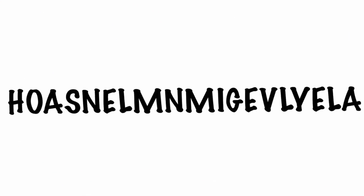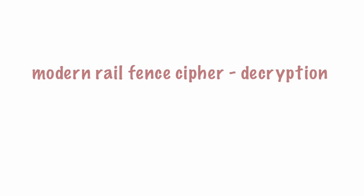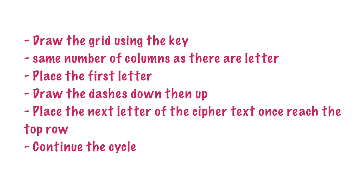Next, we will move on to decrypting the cipher. This requires us to reconstruct the grid which was used to encrypt the message. First, we start by drawing the grid with the number of rows specified by the key, and the same number of columns as the number of alphabets in the encrypted message. Then, the first letter of the encrypted message is placed in the top left square of the grid, with dashes being placed diagonally downwards to the right, which will be replaced by letters afterwards.